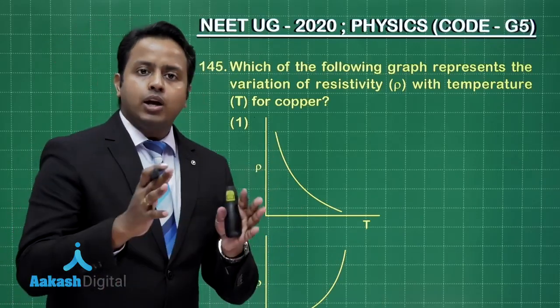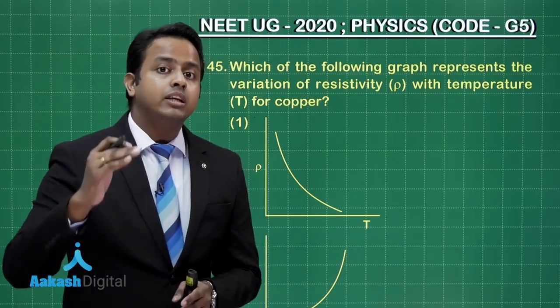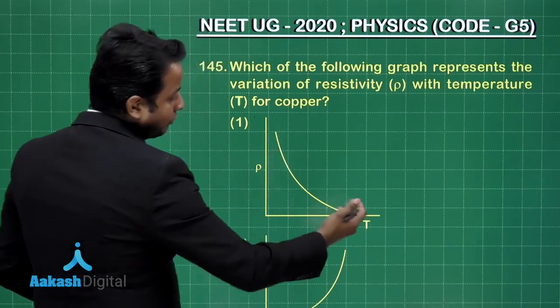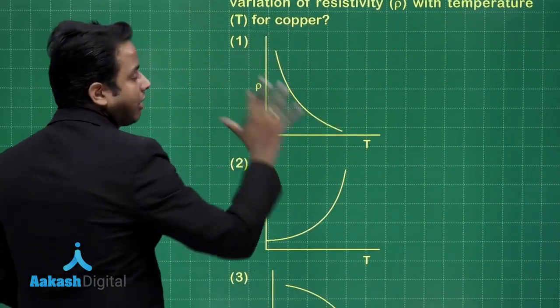Now, I hope you already know copper is a metal and for metal resistivity actually increases parabolic with temperature. So, as clearly the first graph, can you tell me what is the first graph representing actually?